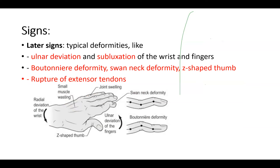Later signs in the patient are typical deformities. This vocabulary you really should know in connection with rheumatoid arthritis: ulnar deviation of the hand in connection to the radius; subluxation of the wrist and fingers; boutonniere deformity; swan neck deformity; and the Z-shaped thumb, also called the 90-90 deformity, where you have 90-degree angles at two points.